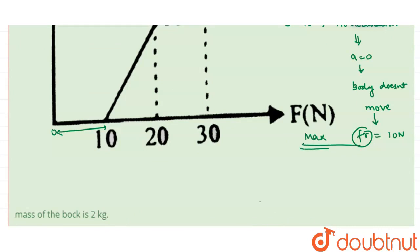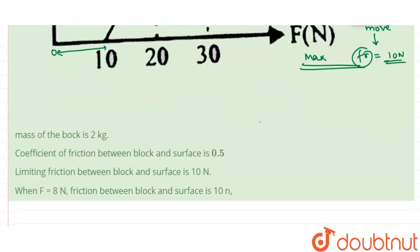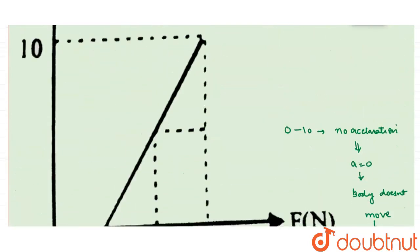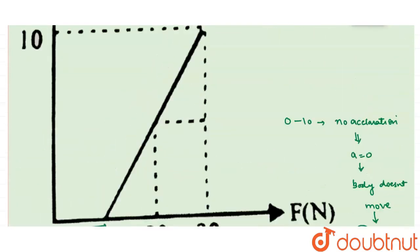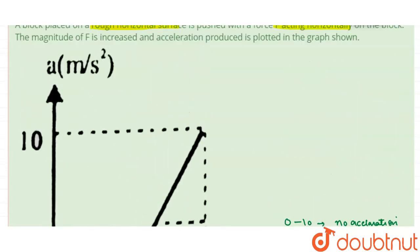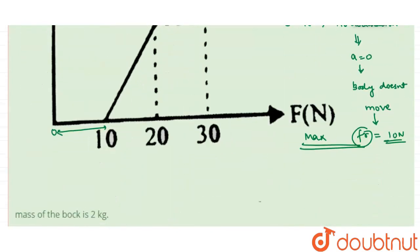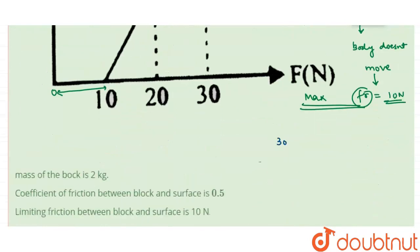Now checking the first option — the mass of the block is 2 kilogram. From the graph, when force is 30 newton, the acceleration is 10 meter per second squared. At this point, the maximum friction force of 10 newton is also present.